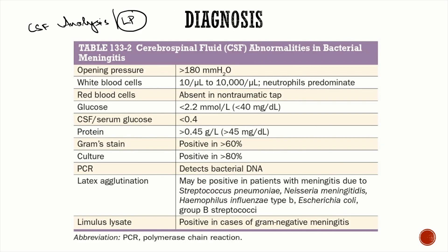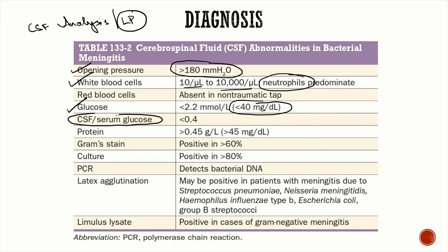CSF findings in bacterial meningitis: raised opening pressure more than 180 mmH₂O, pleocytosis of 10 to 10,000 cells per microliter with predominant neutrophilic pleocytosis, and low CSF glucose (hypoglycorrhachia). Since CSF glucose varies with serum glucose, use the CSF:serum glucose ratio — less than 0.4 is highly suggestive of bacterial meningitis.